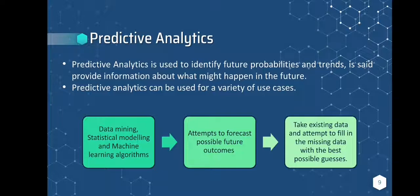So how does predictive analytics work? Probabilities are used in predictive analytics. It aims to forecast potential future outcomes and the probability of those events using a range of techniques including data mining, statistical modeling, and machine learning algorithms. Machine learning algorithms, for example, take existing data and try to fill in the gaps with the best possible guesses in order to make predictions.